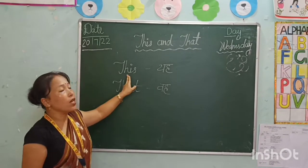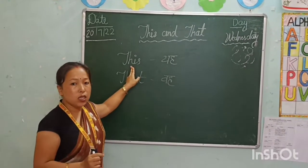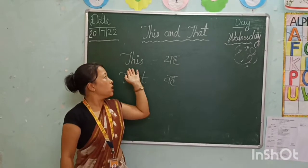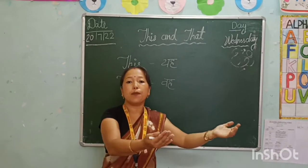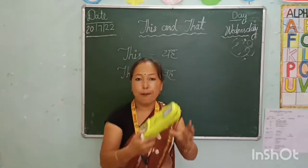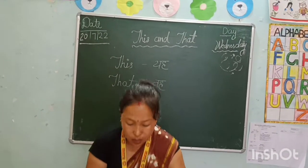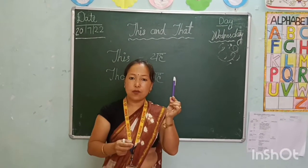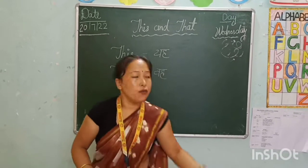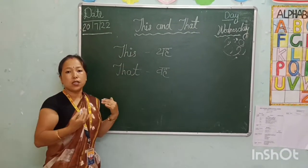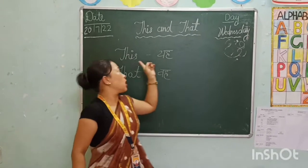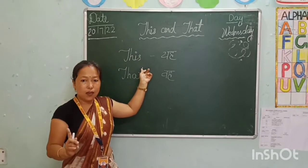We can use this for near things. This ka use karte hai joh cheez hamare paas hoti hai. Like, this is a pencil box. This is a pen. This is a chalk. We use this for near things. Jo cheez hamare paas hoti hai, uske liye ham this ka use karte hai.